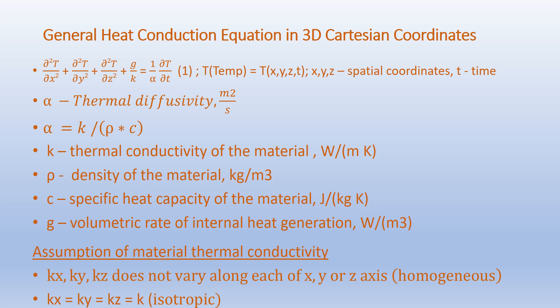Our assumptions on the material thermal conductivity: the thermal conductivity along the x direction does not vary — it is considered homogeneous along the x direction. Likewise, k_y and k_z are constant along the y and z directions. We also have k_x equals k_y equals k_z equals k, which is the isotropic condition.